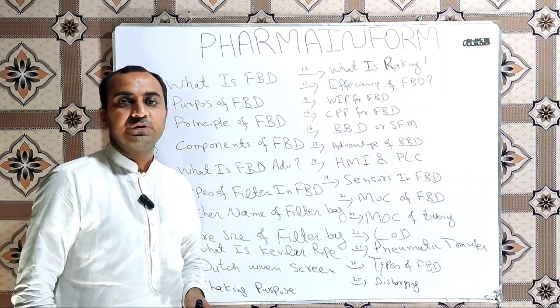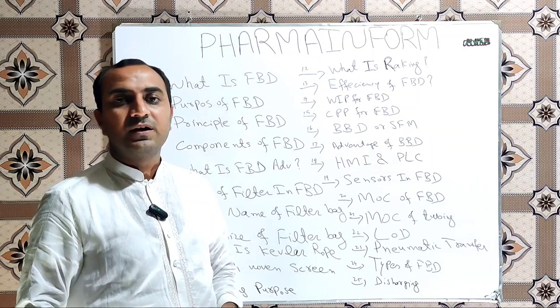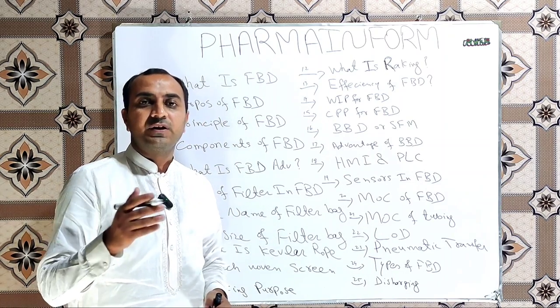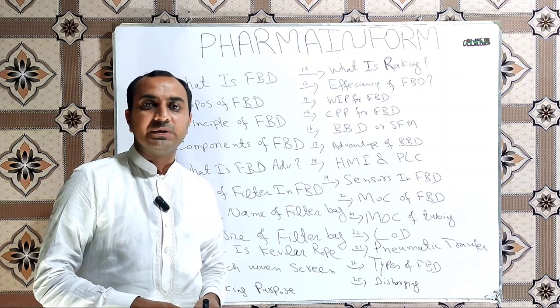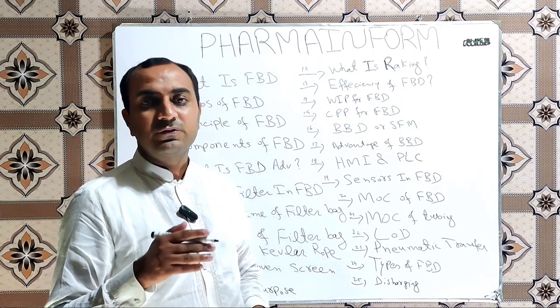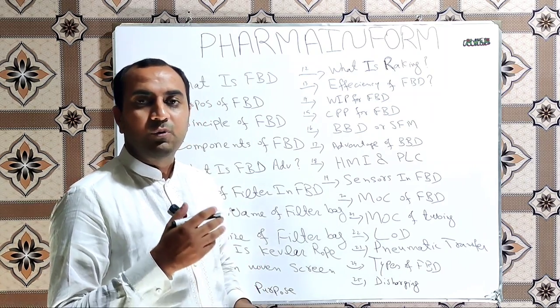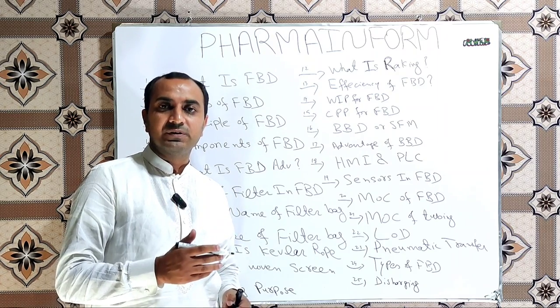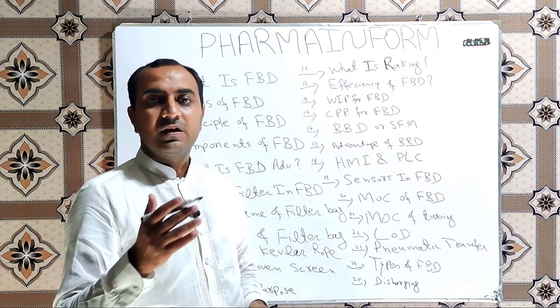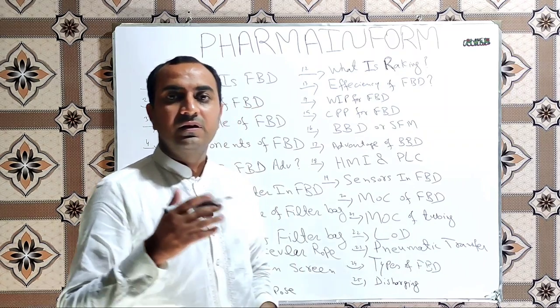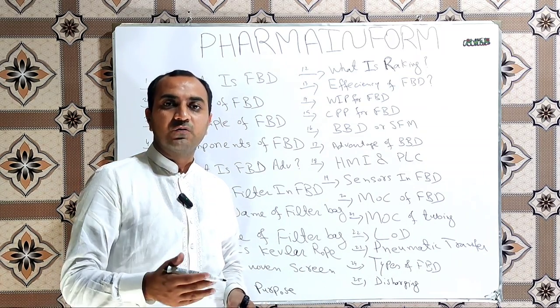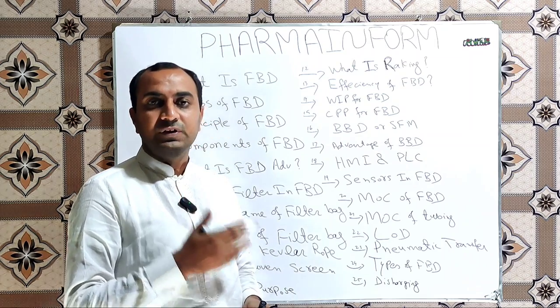The next important question is what are the parts of fluidized bed dryer or what are the different components of FBD. The main important parts of FBD are product trolley, drying chamber or expansion chamber, inlet air duct, outlet air duct, fan motor blower or simply the blower fan, the filter, and blower plenum.